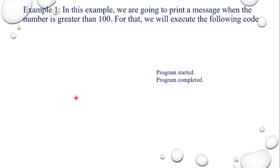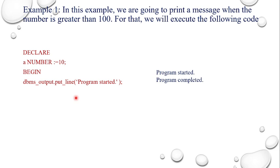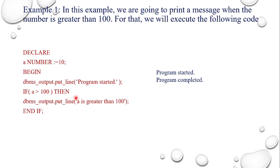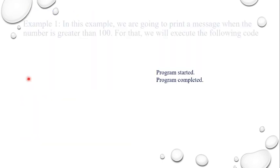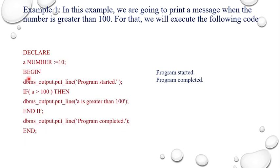For example, suppose I want to print a message when the number is greater than 100. You can use the following code: DECLARE a number := 10; BEGIN DBMS_OUTPUT.PUT_LINE('Program started'); IF a > 100 THEN DBMS_OUTPUT.PUT_LINE('a is greater than 100'); END IF; END; — Once executed, the output will be 'Program started' and 'Program completed'. This is a very simple example for understanding the IF-THEN statement.